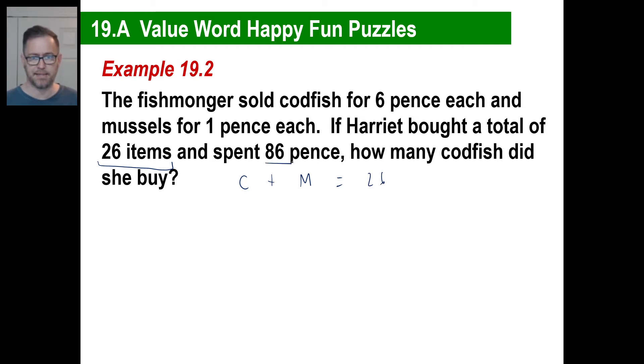She spent 86. The codfish were six. So we go, six times the codfish plus mussels were one. Just write it in. We don't need to write a one. She spent 86. That's going to be 86. Yoink. There we go. We got our two equations.